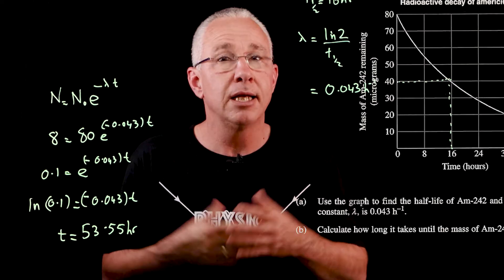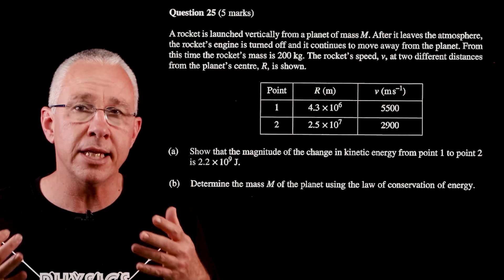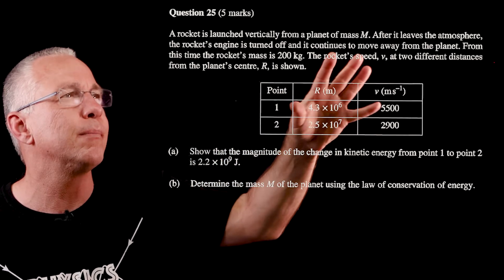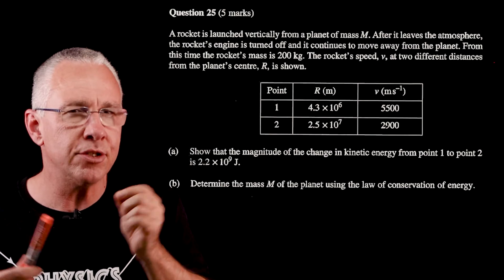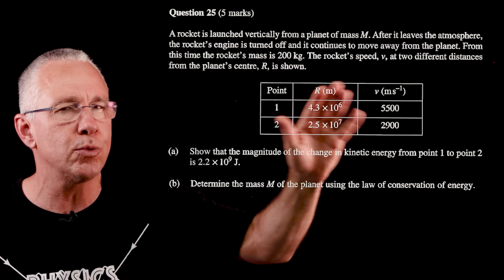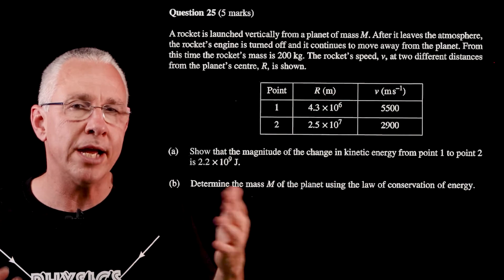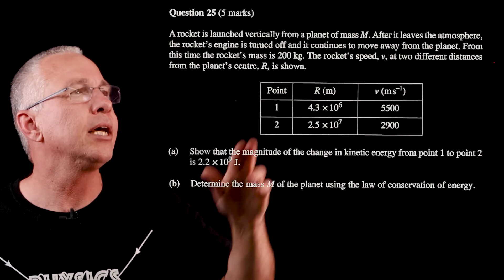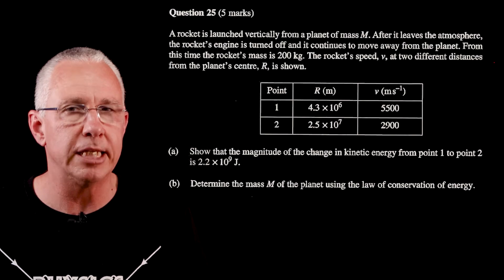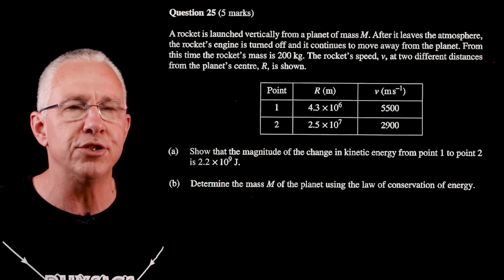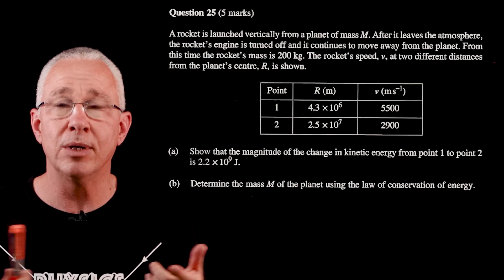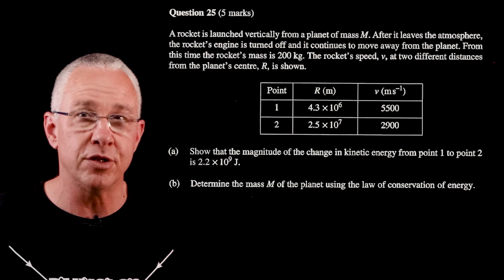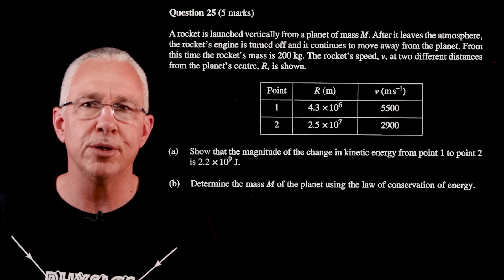Question 25 is from Module 5, dealing with gravitation. A rocket of mass 200 kg launches vertically from a planet of mass M, the engines are turned off, and the rocket continues moving away. At radius r₁ = 0.1, velocity is 5500 m/s; at r₂ = 0.2, velocity is 2900 m/s. We're asked to show the magnitude of the change in kinetic energy between these two points.